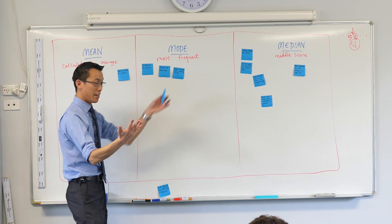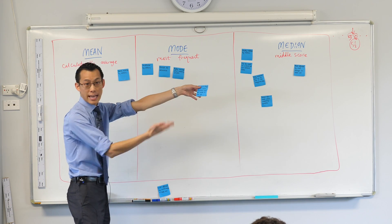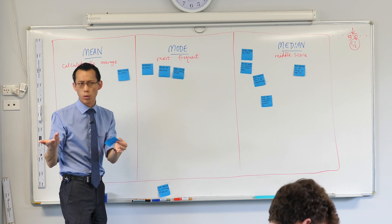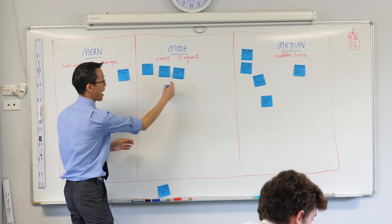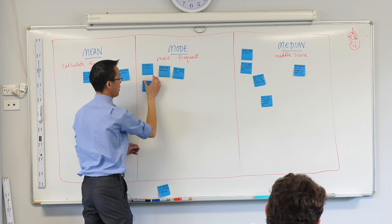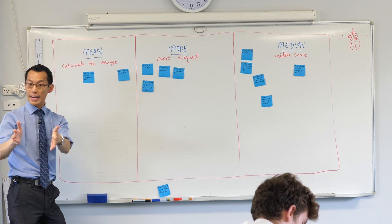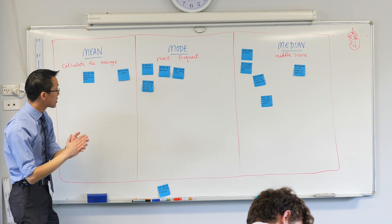One, two, three, four, five, ten, ten. Ten's the mode, and it's nowhere near the center of all the rest of the data. So I think we're happy with that one. May not always be a score anywhere near the center.